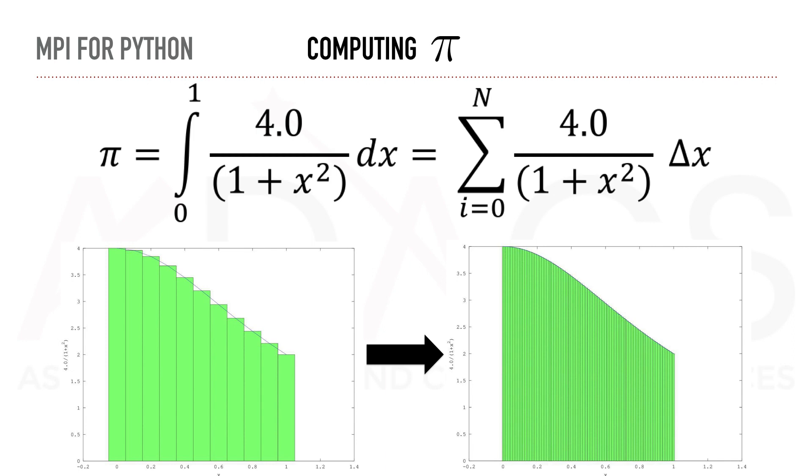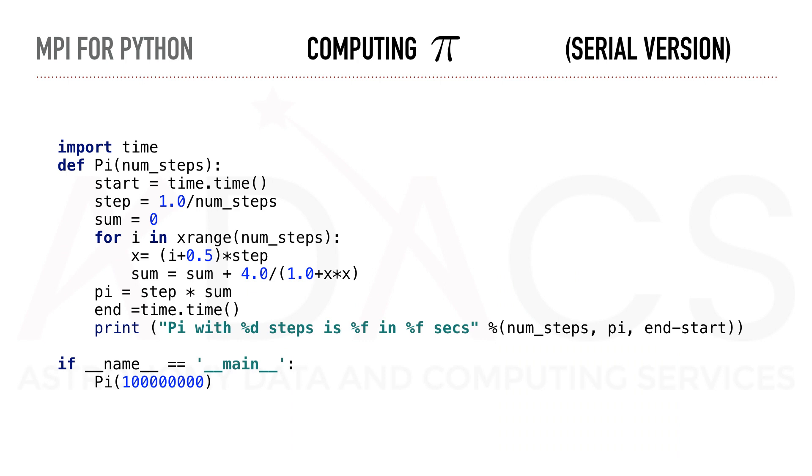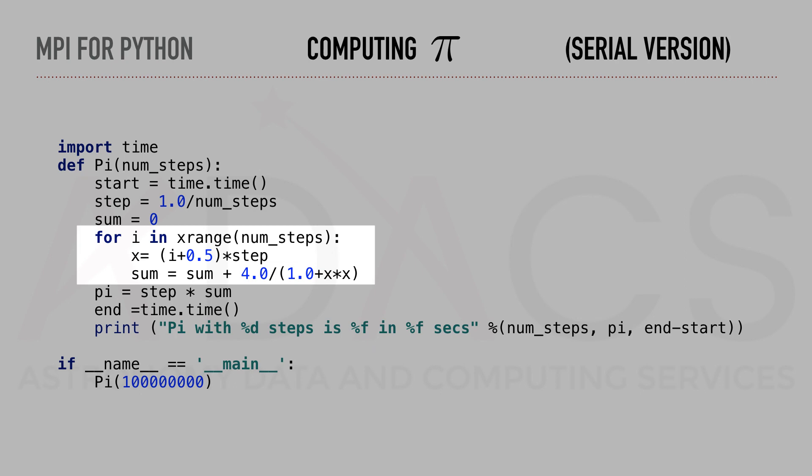In such a case, it is possible to split the summation over multiple processes to accelerate the computation. So first, let's compute PI in a serial manner. This will be done by simply looping over the number of steps and updating the summation result each step.